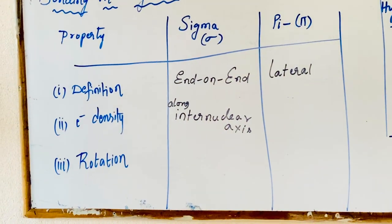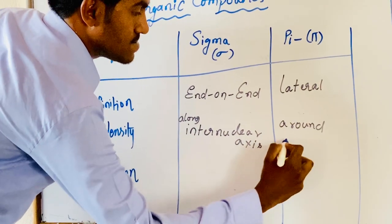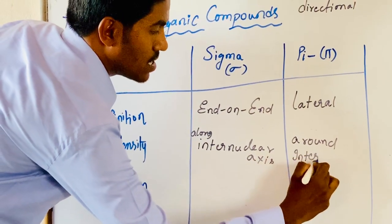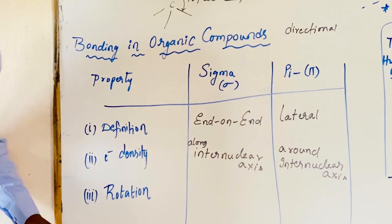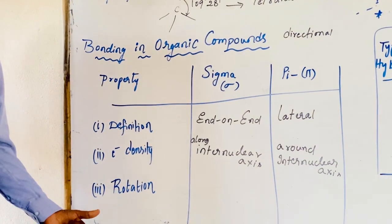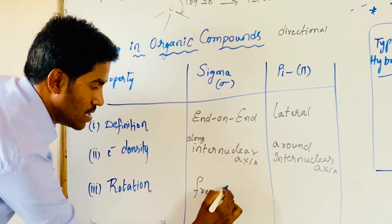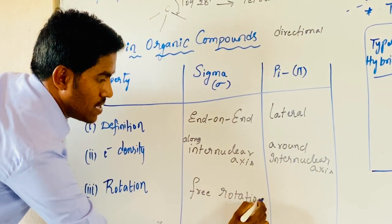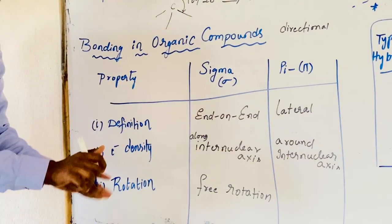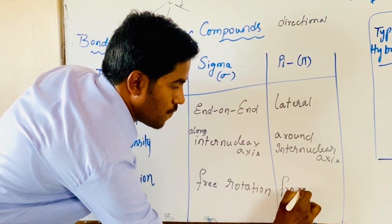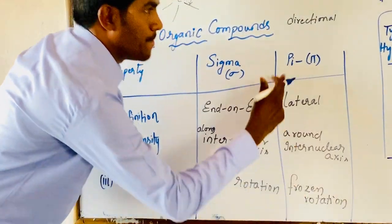In case of a pi bond, the electron density is concentrated around the inter-nuclear axis. Coming to rotation — free rotation is possible in case of a sigma bond. But in case of a pi bond, due to lateral overlapping, there is no free rotation — it is a frozen rotation.